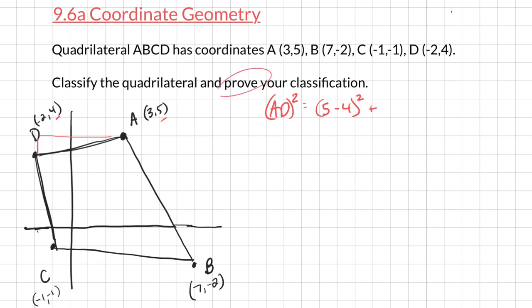And then 3 minus a negative 2. Simplify that. I get 1 squared plus 5 squared. Gets me 1 plus 25. Gets me 26. So AD is the square root of 26.